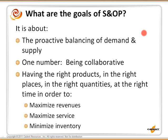To us, S&OP is about the proactive balancing of demand and supply. From the demand side, it's trying to get to one number — so you don't have a finance number, a marketing number, a sales number, and a supply chain number. All those numbers should feed into one. S&OP enables a company to be collaborative across various functions and come up with one agreed-upon demand plan. The reason you want one demand plan is to have the right products in the right places and the right quantities at the right time — to maximize sales, maximize service, and minimize inventory.